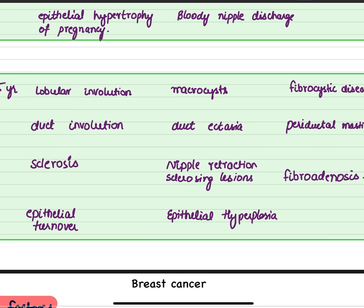The final thing in the involution stage is epithelial turnover. The whole breast epithelium also involutes, but if there is some aberration, the epithelium may pile up and lead to epithelial hyperplasia.